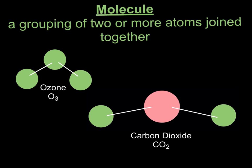First, we need to know what a molecule is. A molecule is a grouping of two or more atoms joined together. So here we have the molecule of ozone, which is in our stratosphere, which is our second layer of the atmosphere. And the ozone is one type of atom, which is oxygen, and I have three of them that are combined to make a molecule ozone.